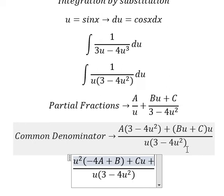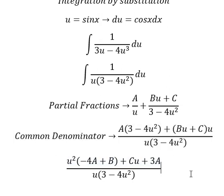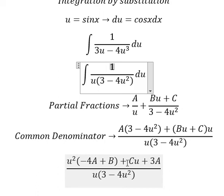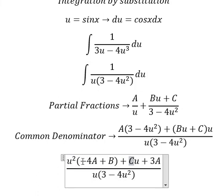Now we can see that 3A equals 1, so A = 1/3. We don't have a C term, so C = 0. And we have -4A + B = 0, which gives us B = 4/3. Now we need to find the solutions for A, B, and C.